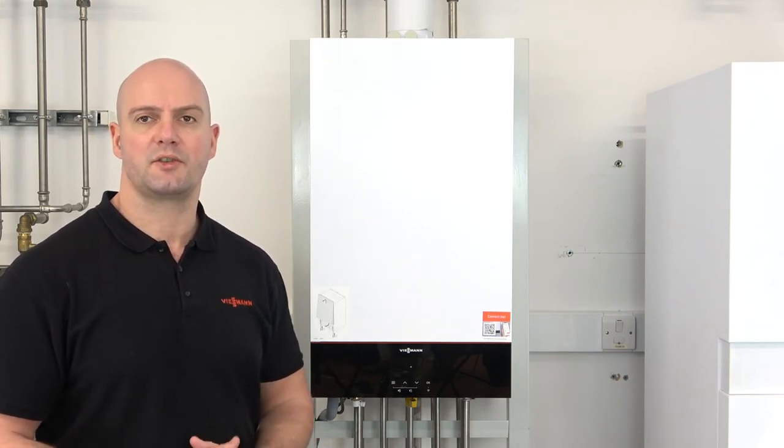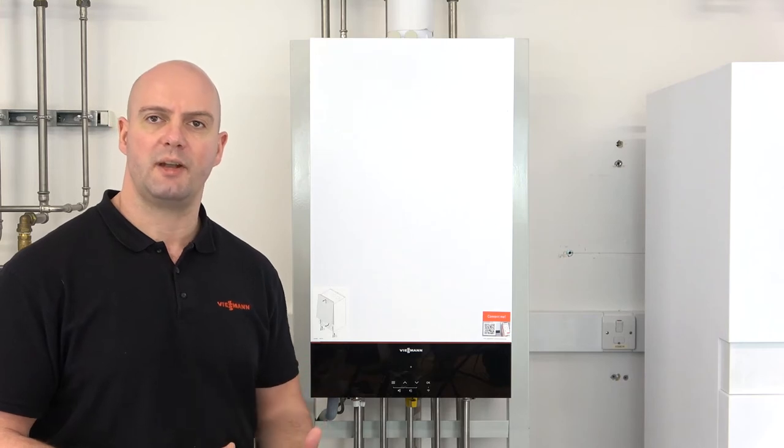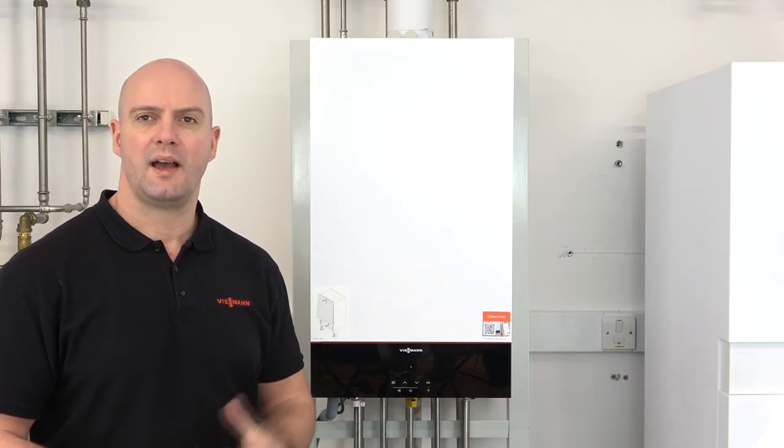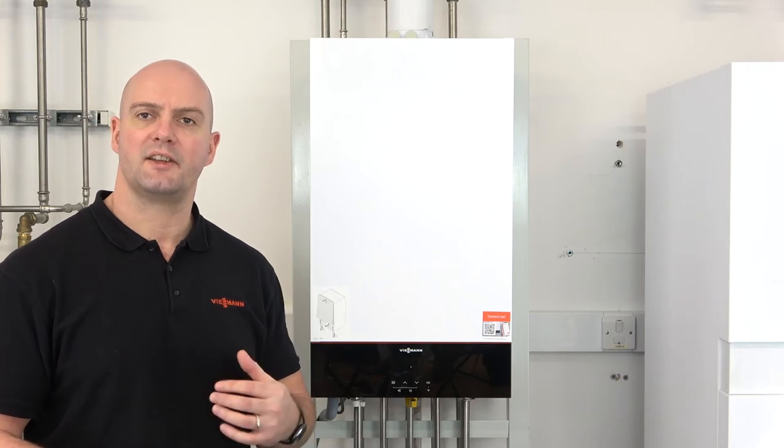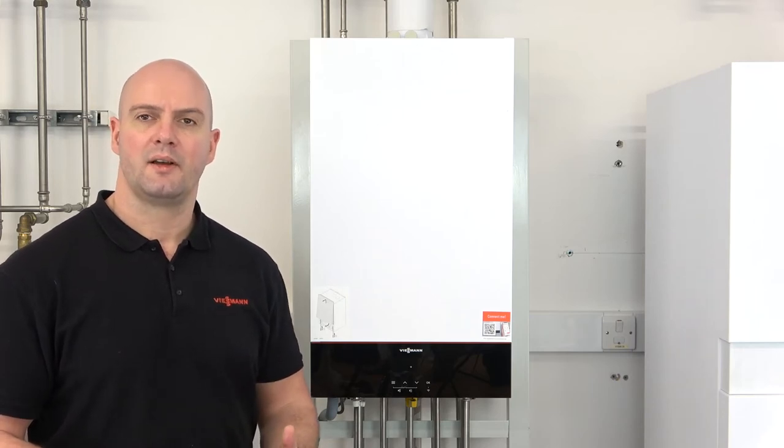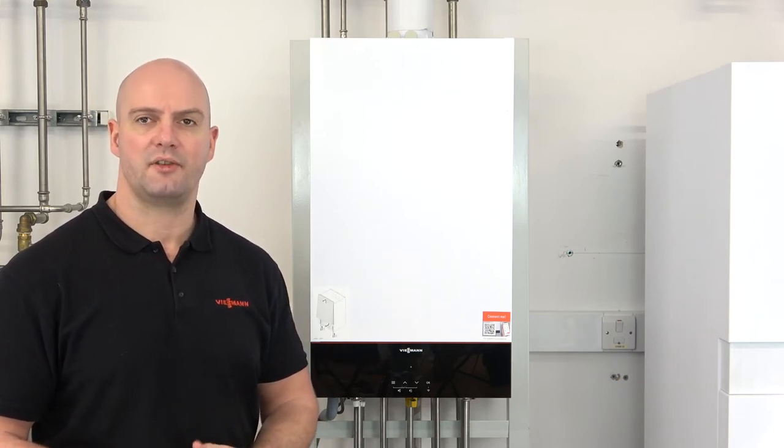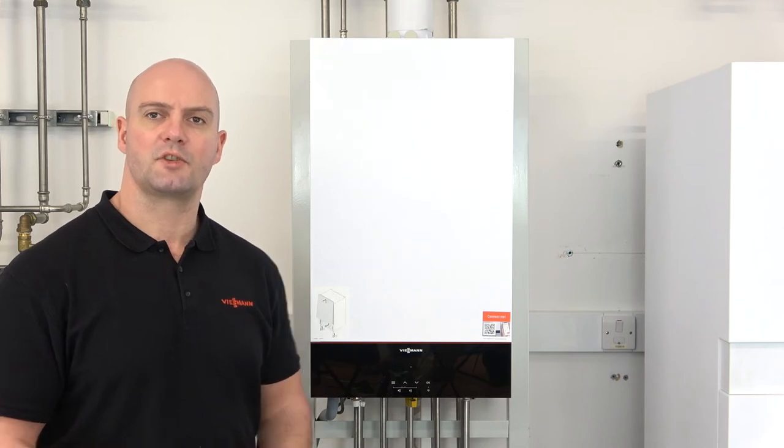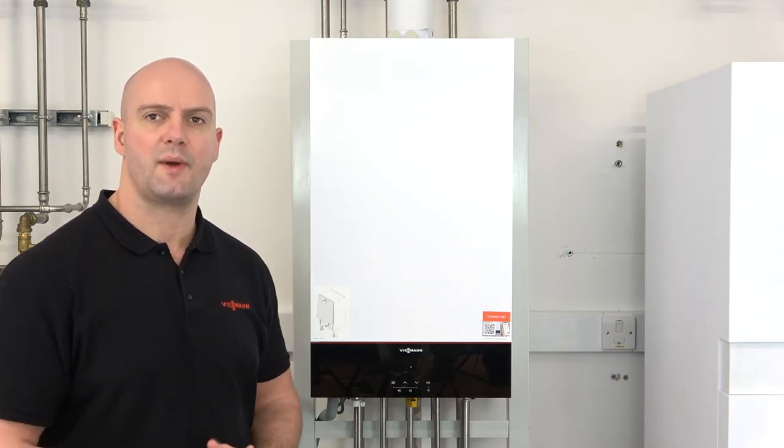In the service menu we can do such things as put the boiler into its minimum and maximum rate, accessing the commissioning mode, accessing the parameter menu, and also looking at the previous error history for the boiler. So we're just going to have a look at the front panel now and I'll show you how to access the B codes.